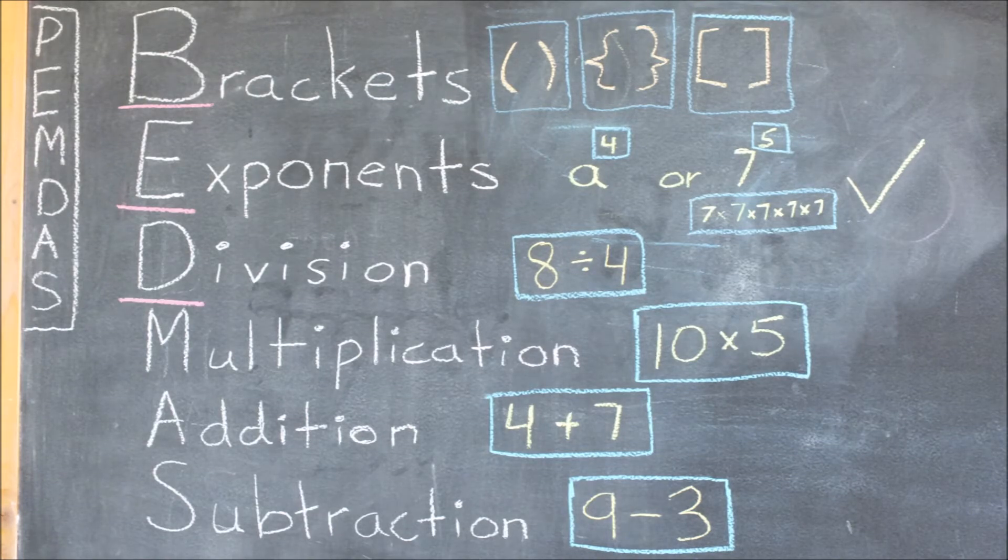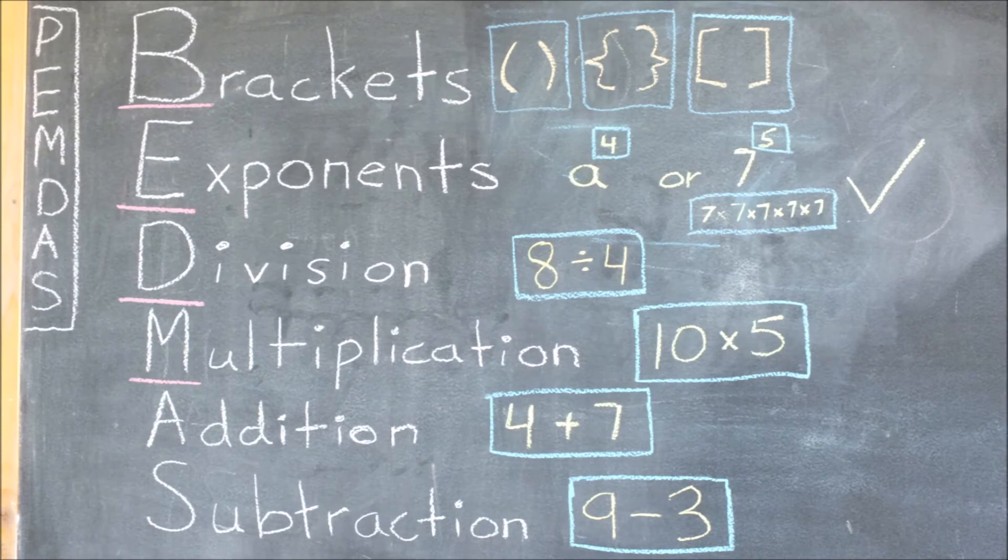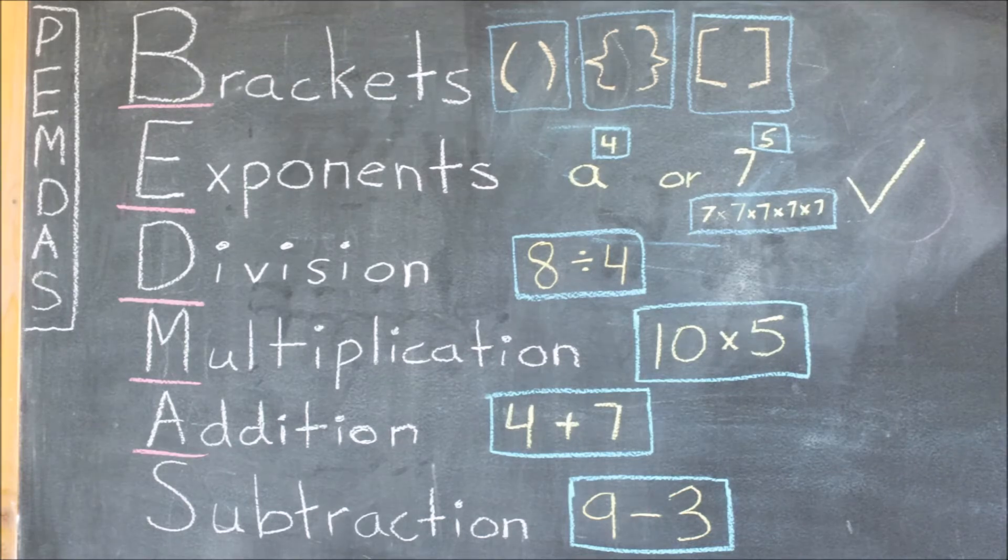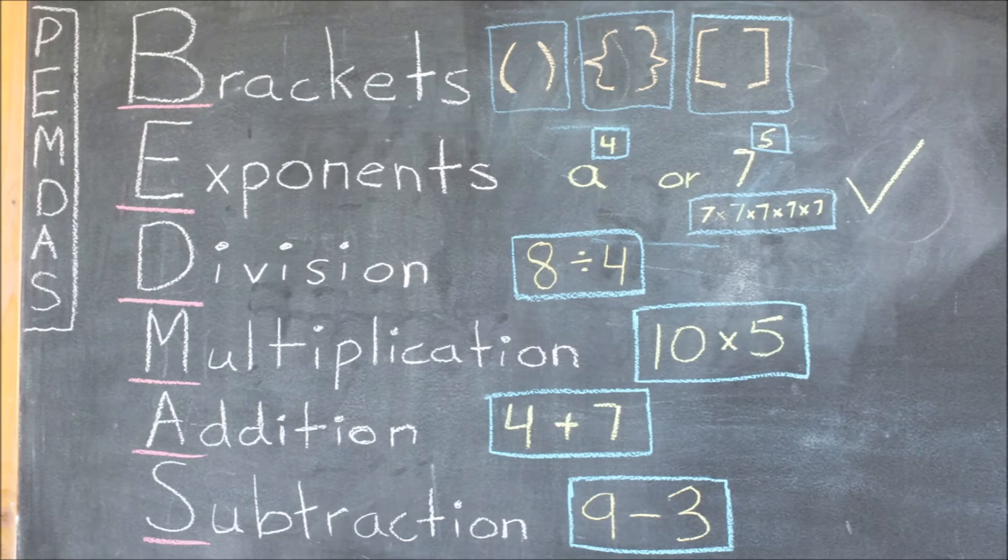The last thing you need to know is that division and multiplication and addition and subtraction are always going hand in hand. That means, if there was only division and multiplication left in an equation, you would solve the operations from left to right, no matter if division or multiplication came first. And likewise with addition and subtraction.